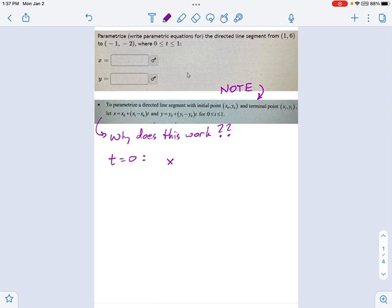If t equals 0, look at what this equation becomes. It becomes x equals x0, the initial position, plus x minus x0 times t equals 0. So this whole part goes away. In other words, when t equals 0, x equals x0.